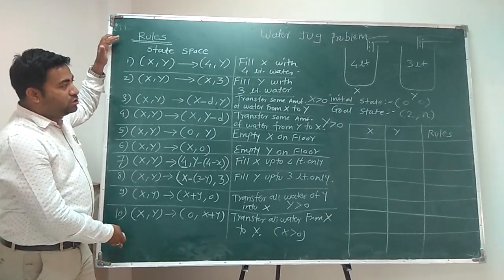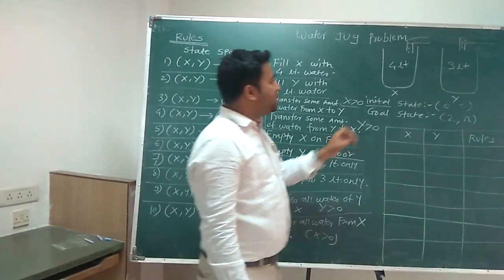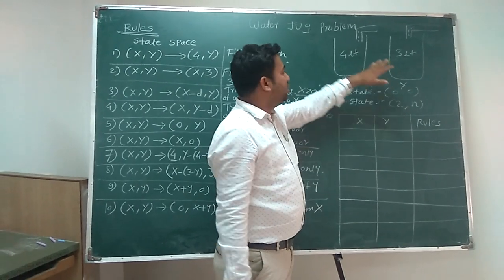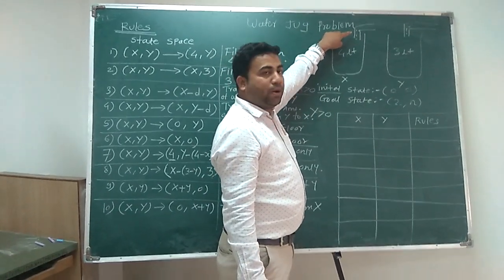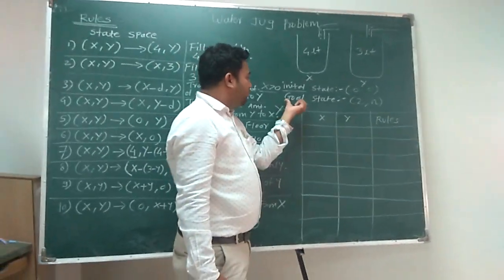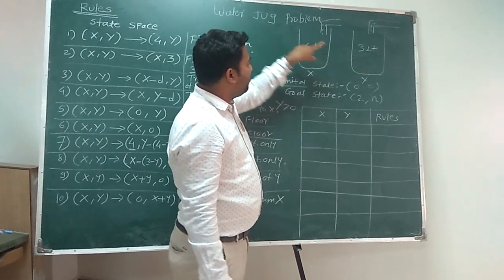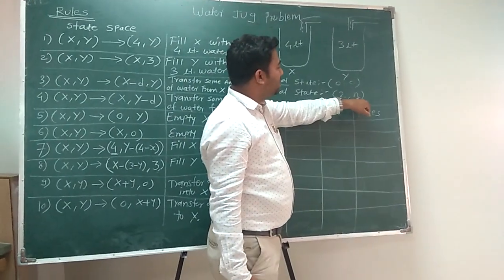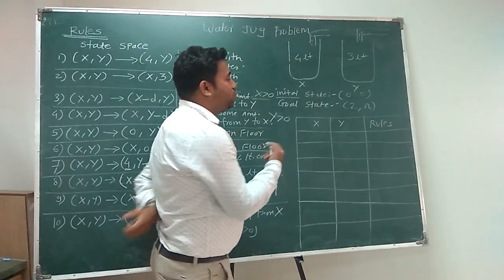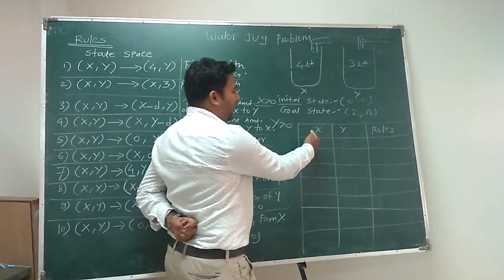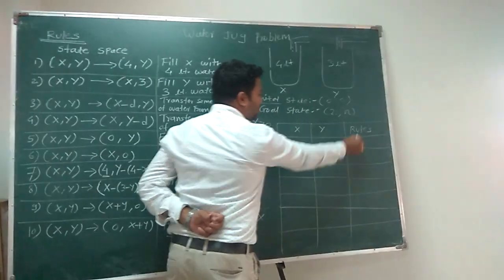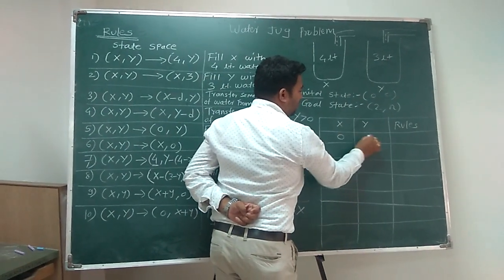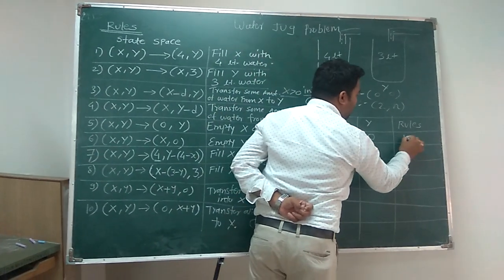So there are 10 production rules for solving the water jug problem. We have 2 jugs: the first is 4 litres, the second is 3 litres. Our initial state is (0, 0) — both jugs are empty. There is 1 pump to fill the jugs, and our goal state is (2, n). Now let us draw a table with 3 columns: x (jug 1), y (jug 2), and the rule applied. The initial state is (0, 0) with no rule applied — written as nil.